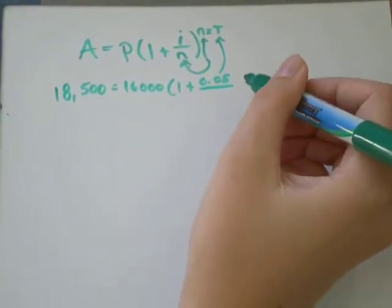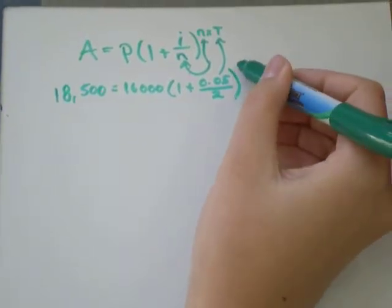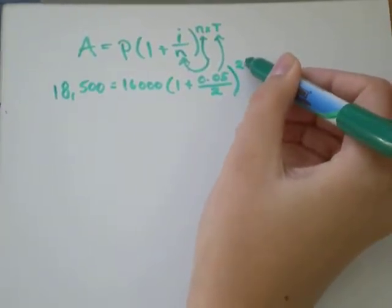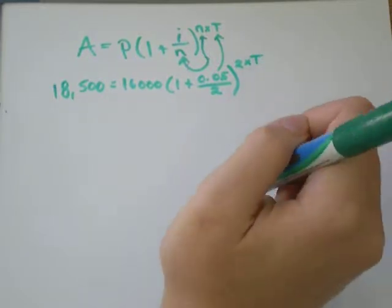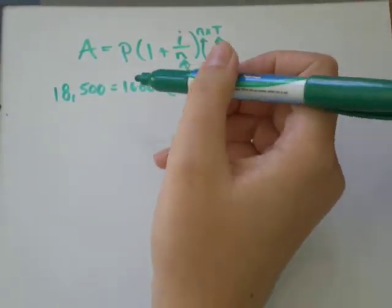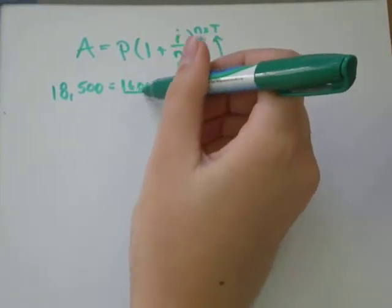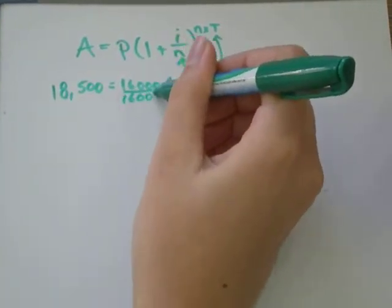Interest was compounded semi-annually, that means twice a year. So n is 2, this n is also 2, and it's 2 times the length of time. We don't know what that is yet. The first thing I'm going to do is get rid of the 16,000 over here. So I'll divide both sides by 16,000.